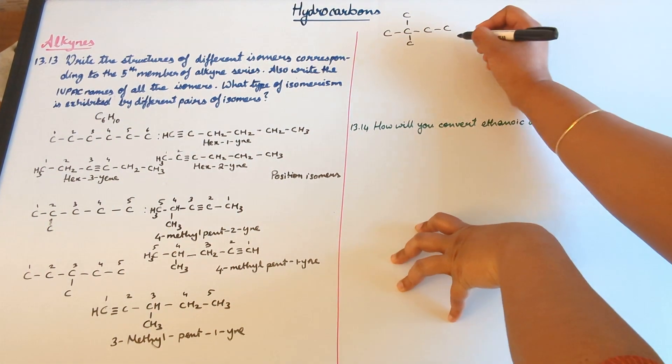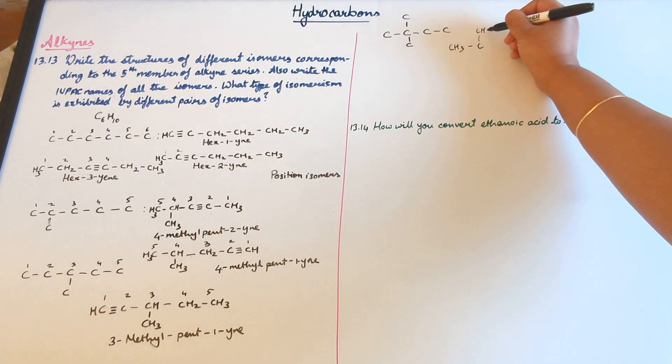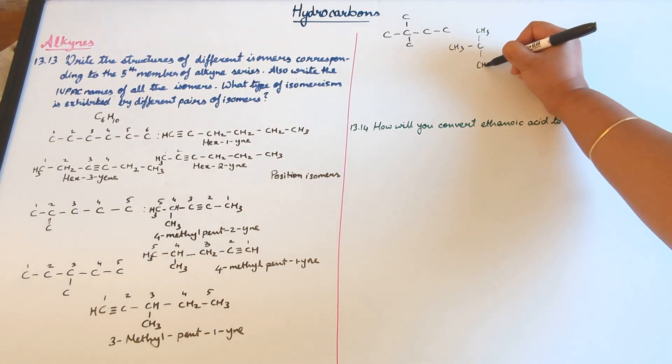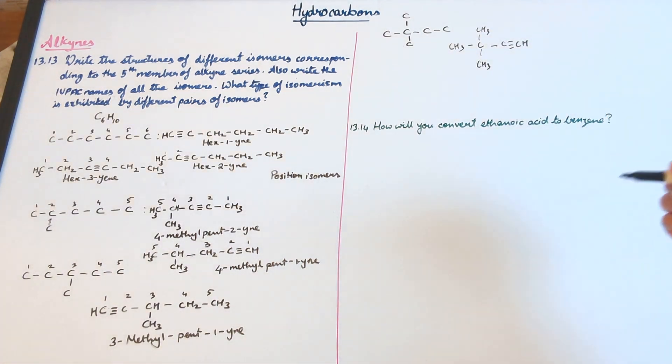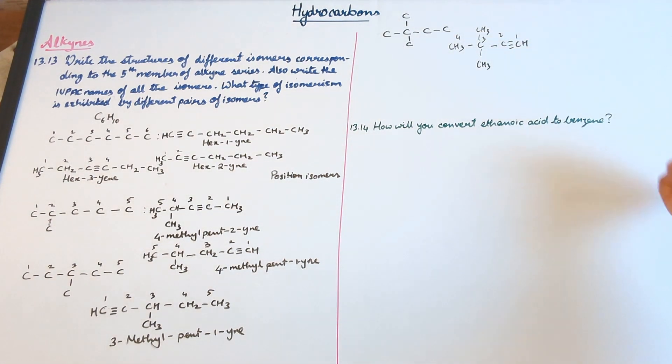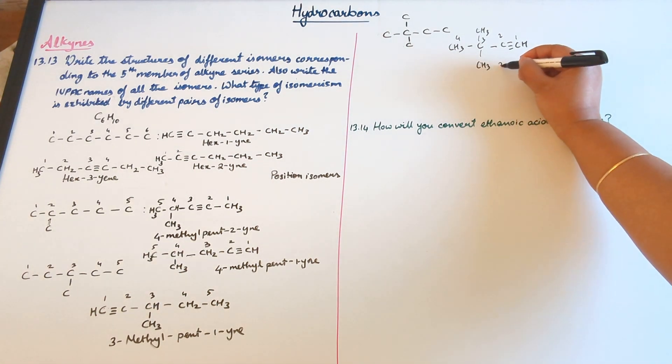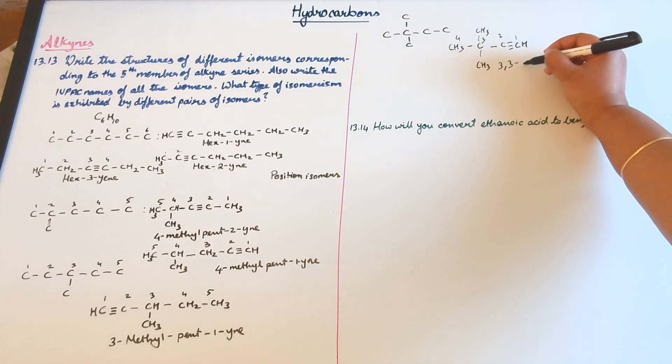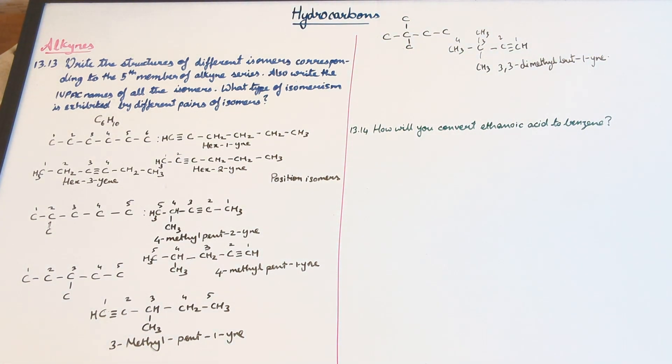So the structure is going to become CH3-C triple bond C with two CH3 branches. And numbering is obviously going to be from the right to left. So you have two methyl groups attached to the third position. So 3,3-dimethyl-but-1-yne.